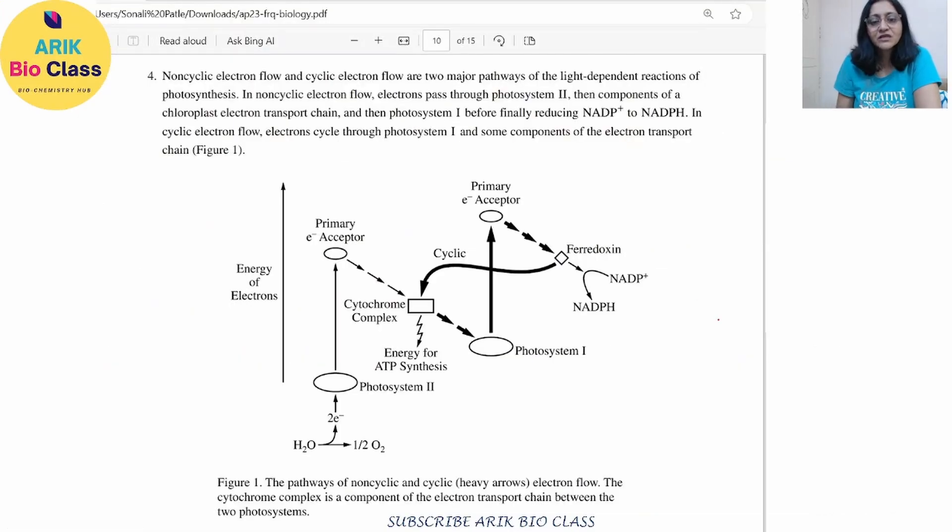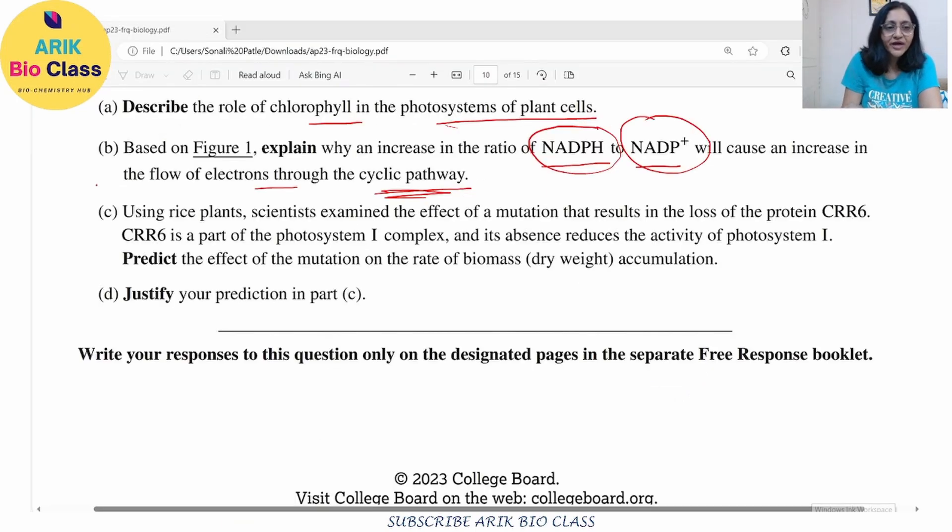increase in ratio of NADPH to NADP+ will cause an increase in the flow of electron through the cyclic pathway. So here what happens when this conversion takes place, when NADPH will keep on forming. As a result, this NADPH will, whatever electrons are being released, they will move towards which pathway? Since non-cyclic pathway is not possible now because of the absence or less concentration of NADP+, so the electron flow will increase towards the cyclic pathway. So that's the explanation to part B.